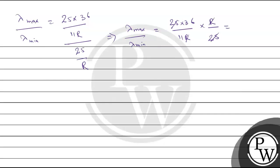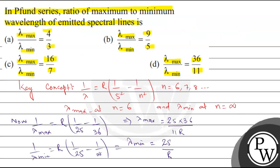The ratio will be 36 upon 11. So therefore our answer will be: ratio of lambda max upon lambda minimum in Pfund series is 36 upon 11. So the answer for this question will be option D. Hope you understand the question, best of luck.